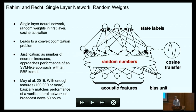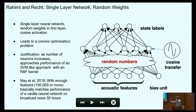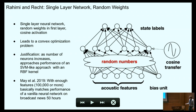Here are some results from Avner May and others using Rahimi and Recht's ideas. Rahimi and Recht basically describe a construction where you have a single-layer neural network with random weights in the first layer and a cosine activation function. This leads to a convex optimization problem where you're just optimizing the top-level weights. The justification is that as the number of neurons increases, using some straightforward Fourier analysis, the approach converges to performance of an SVM-like approach with an RBF kernel. What we showed is that with a wide enough network — on the order of hundreds of thousands of features — these models basically match the performance of a vanilla feedforward network.